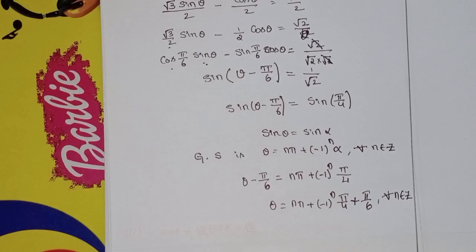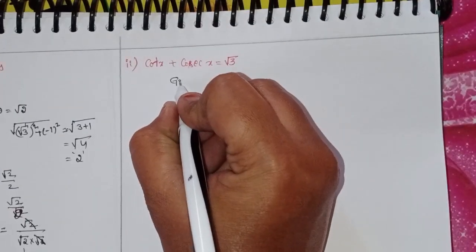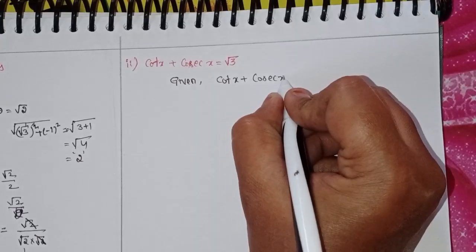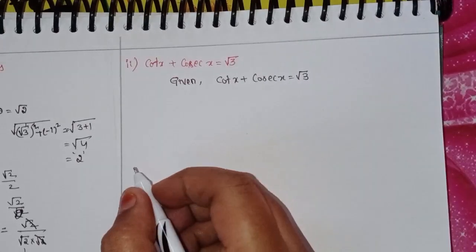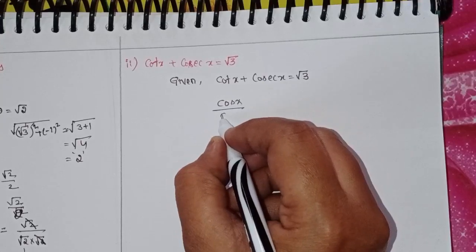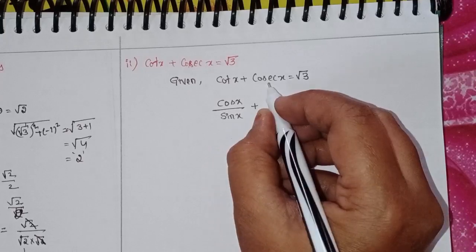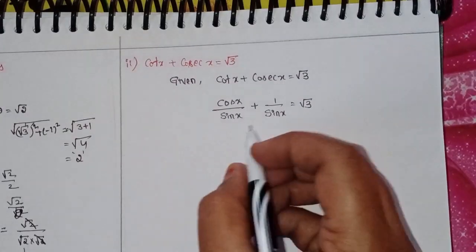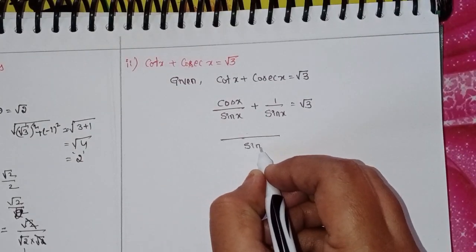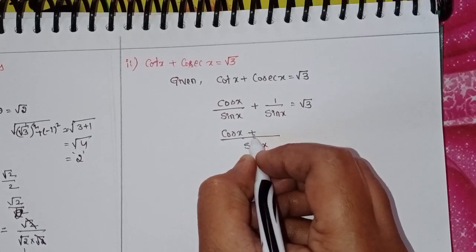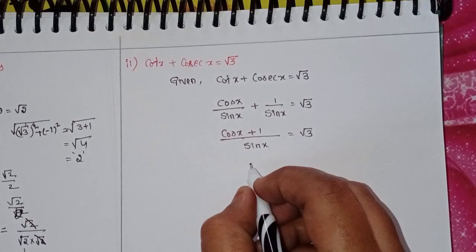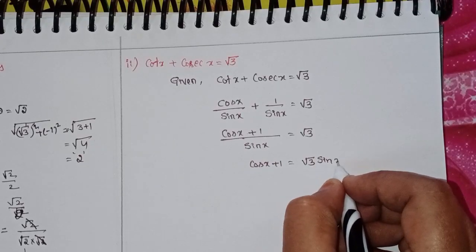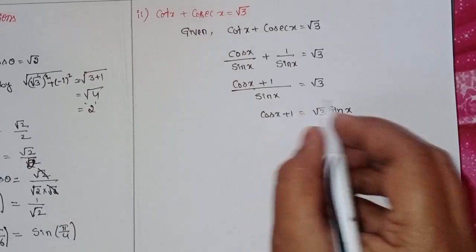Next, the second problem: cot x + cosec x = √3. We write cot x as cos x/sin x and cosec x as 1/sin x, so (cos x + 1)/sin x = √3, giving cos x + 1 = √3·sin x, or equivalently √3·sin x − cos x = 1.